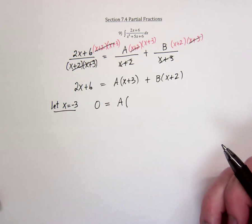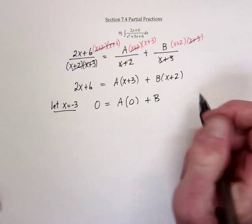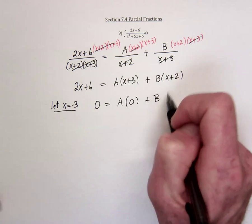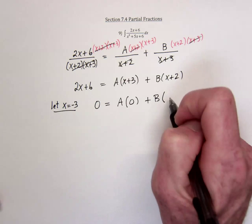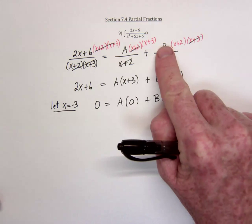It's going to be A times, that would be 0, plus B times, if I use negative 3, it's going to be negative 3 and positive 2, so that's negative 1. Consequently, what I have tells me that B is equal to 0. If B is equal to 0, this term would be gone.